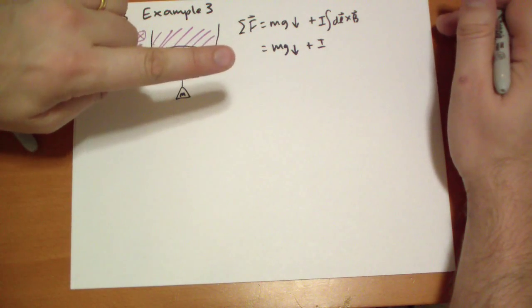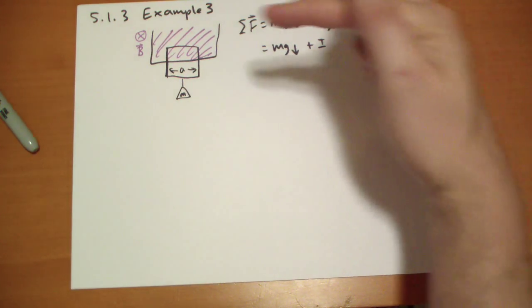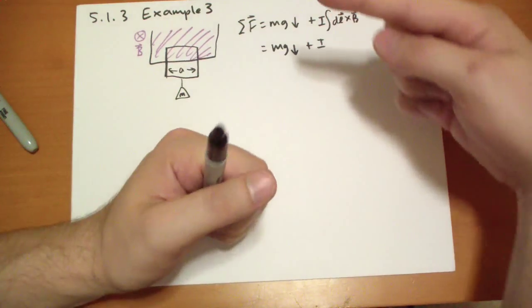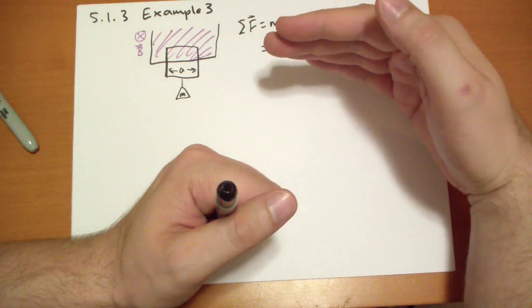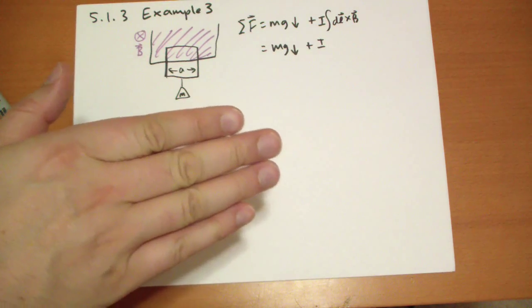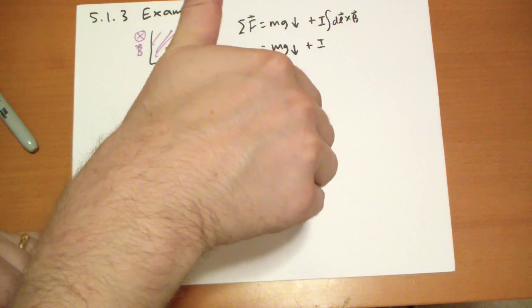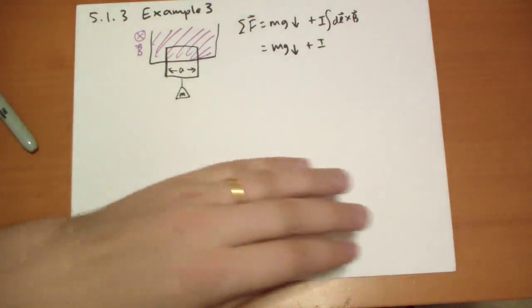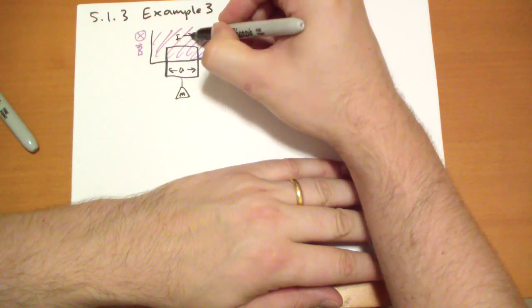What's that equal to? So we have Mg down, and then we're going to get I DL cross B. If I flows this direction, that'll be bad. So we have to integrate this direction. IL cross B. I need to use my right hand consistently. So the current flows this direction, cross B, and we get the cross product pointing up. So the I has to flow this direction.